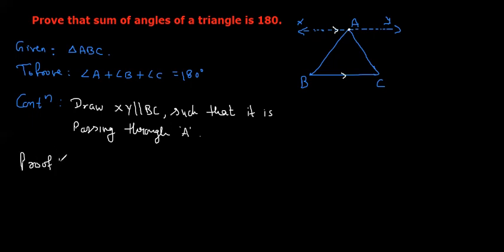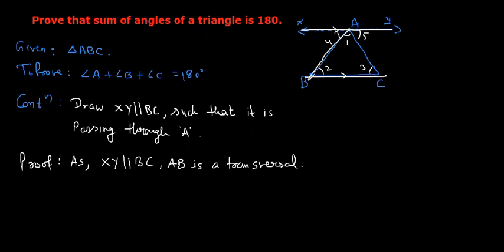Now proof. Let me take some numbers 1, 2, 3, this angle 4 and this angle 5. As you know these two lines are parallel, as XY is parallel to BC, if you observe this line becomes a transversal. AB is a transversal. Can you tell me which property is used?